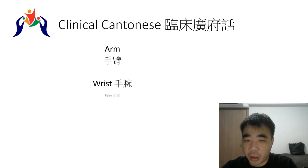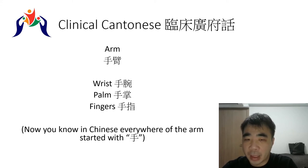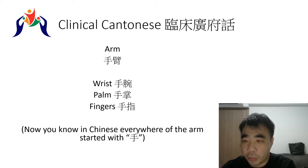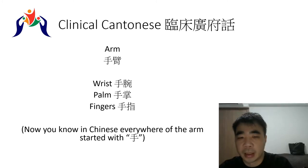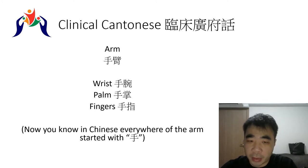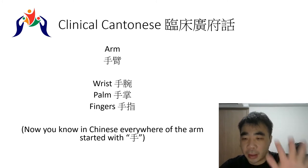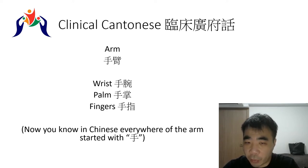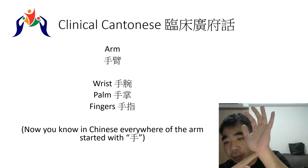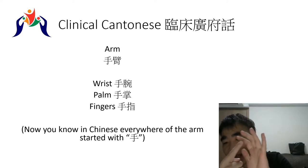The whole arm is represented by one term, and further down the wrist is called 手腕 (shou wun). The palm side is called 手掌 (shou zhan). Going into individual fingers, we call them 手指 (shou zhi). To repeat all three in a row: shou wun, shou zhan, shou zhi.